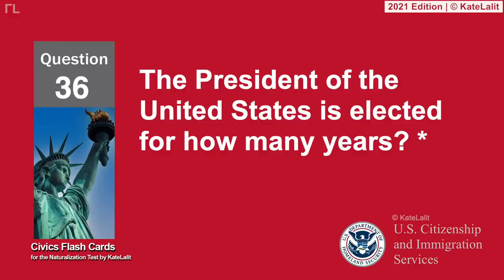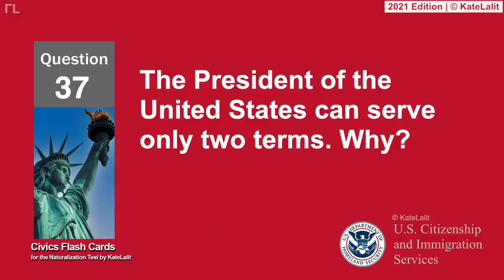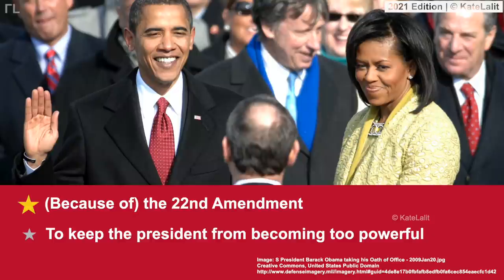The President of the United States is elected for how many years? Four years. The President of the United States can serve only two terms — why? Because of the 22nd Amendment, and to keep the President from becoming too powerful.